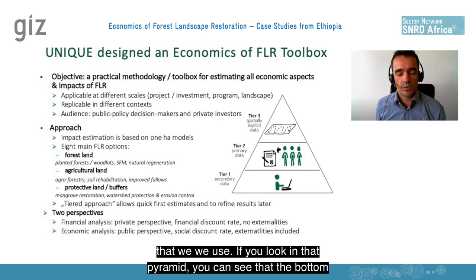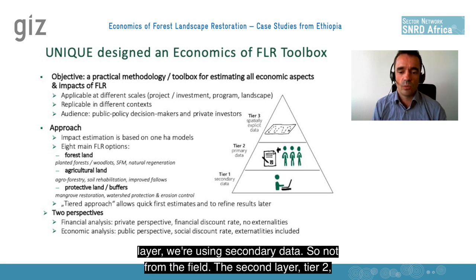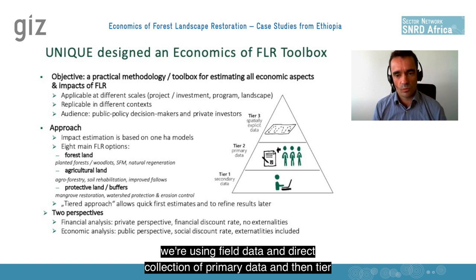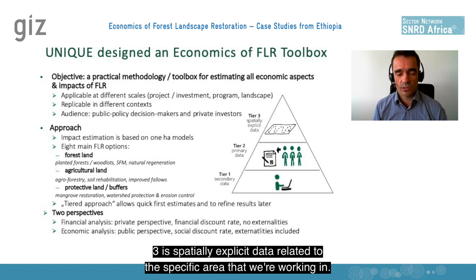If you look at that pyramid, you can see that the bottom layer uses secondary data — not from the field. The second layer, tier two, uses field data and direct collection of primary data. And then tier three is spatially explicit data related to the specific area that we're working in.